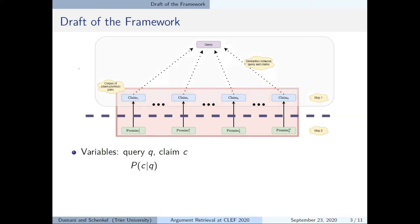In the first step we want to find the most similar claims to the query, following the intuition that the more similar a claim is to the query the more relevant are the claim's premises to the query. We can define this as conditional probability.